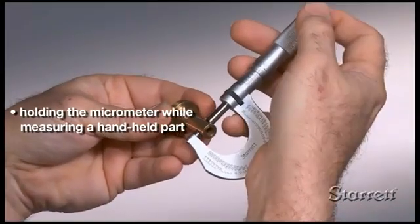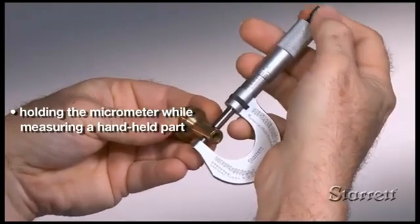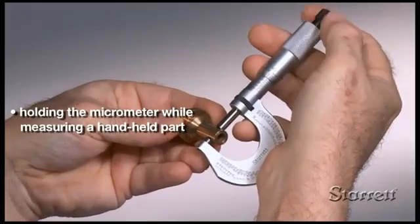To make a measurement, hold the part with your left hand and position it against the anvil face. Then, hold the micrometer with your right hand and turn the thimble counterclockwise until the spindle face contacts the part.